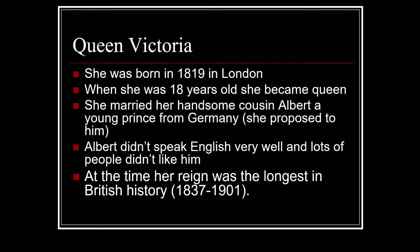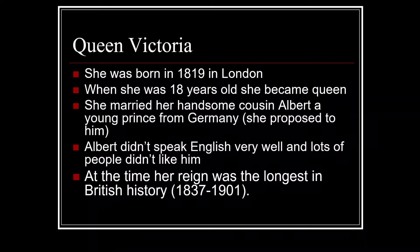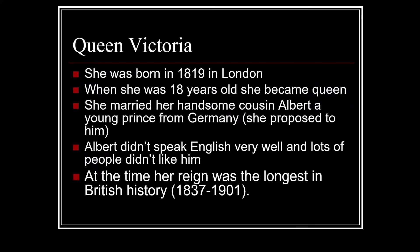We'll start with probably the most famous Victorian of all: Queen Victoria. She was born in 1819 in London, she became Queen when she was 18 years of age, and she married her handsome cousin Albert, who was a prince from Germany. She proposed to him, which was very unusual in the Victorian age because it wasn't seen as proper for ladies to behave in that way. Albert didn't speak English very well and lots of people didn't like him, but Queen Victoria was besotted with Albert and they were very happily married for 21 years, during which time they had nine children.